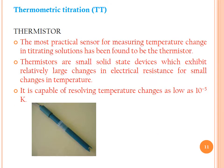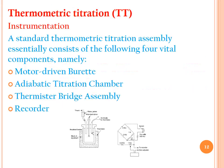The most practical sensor for measuring temperature change in a titrating solution is the thermistor. Thermistors are small solid-state devices that exhibit relatively large changes in electrical resistance for small changes in temperature. They are capable of detecting temperature changes as low as 10⁻⁵ K, sensing very minute changes occurring between the reaction of titrant and titrand. The standard TT assembly consists of four vital components: a motor-driven burette, an adiabatic titration chamber, a thermistor bridge assembly, and a recorder.